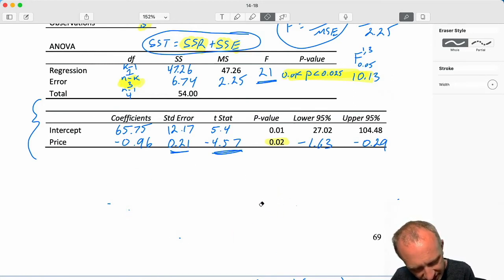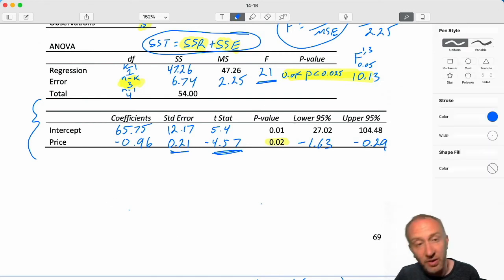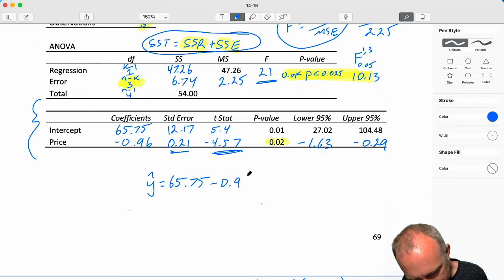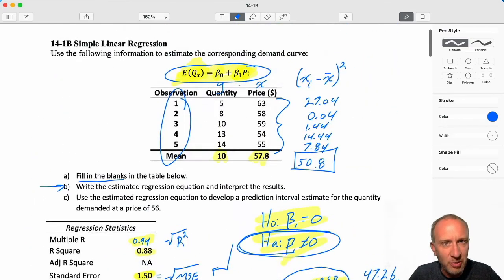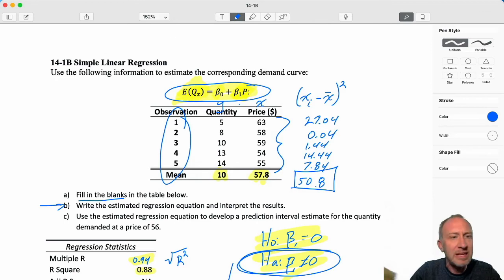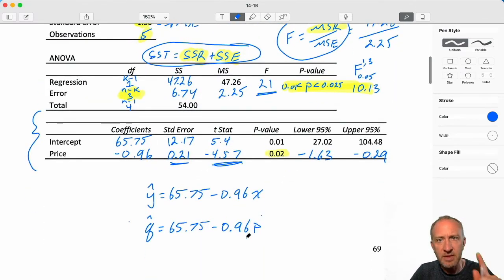So we've completed our table. We have everything that we need to understand the nature of the relationship. We have our predicted value is equal to 65.75, minus 0.96x. Or if I wanted to, I could say this is my predicted quantity, 65.75, minus 0.96 price. Because remember, we're working with a demand curve here. So I can use q and p, instead of x and y.